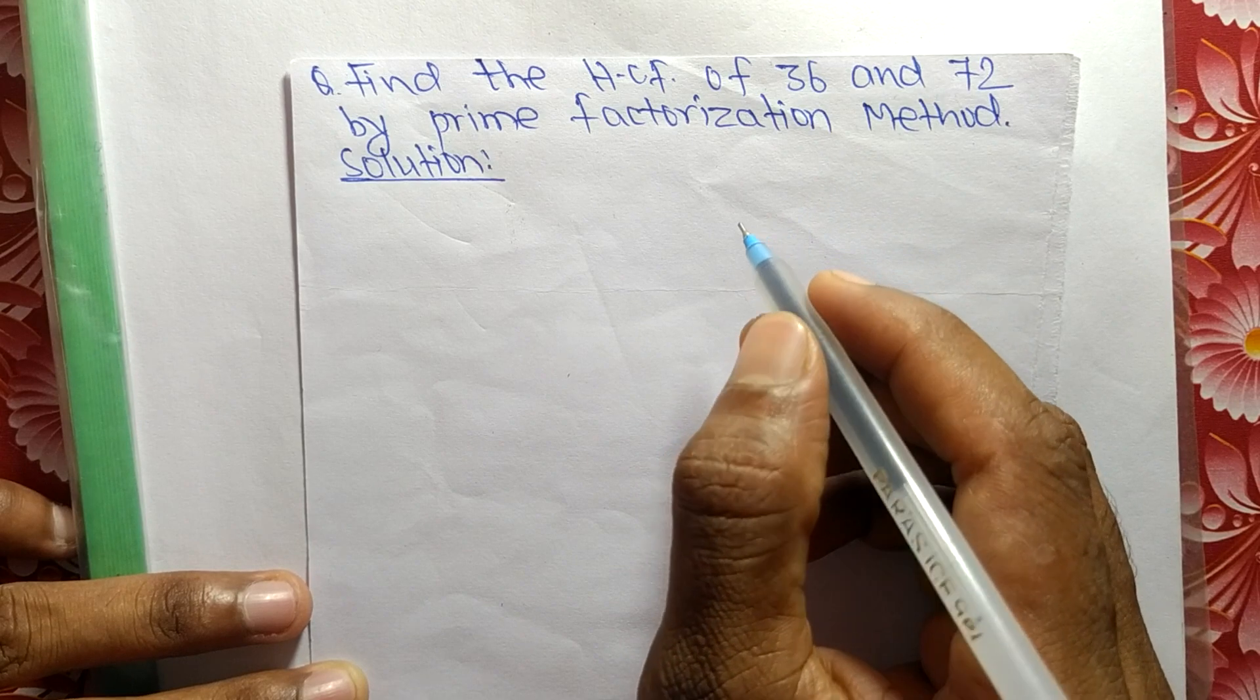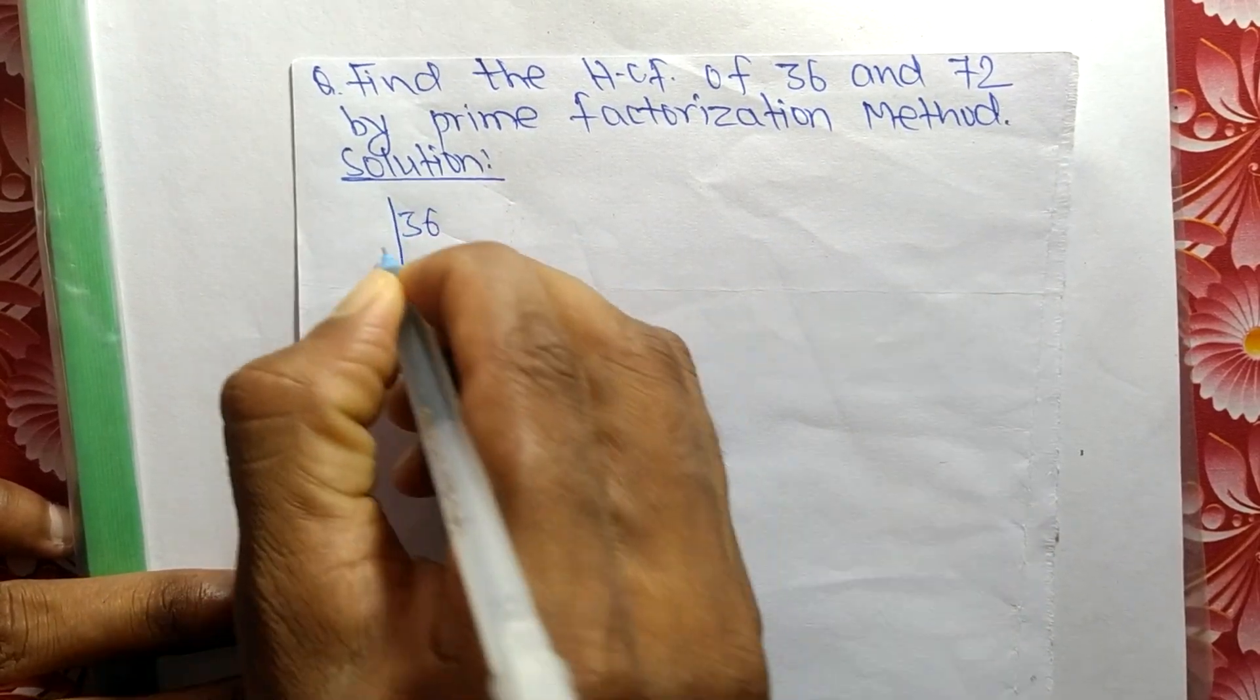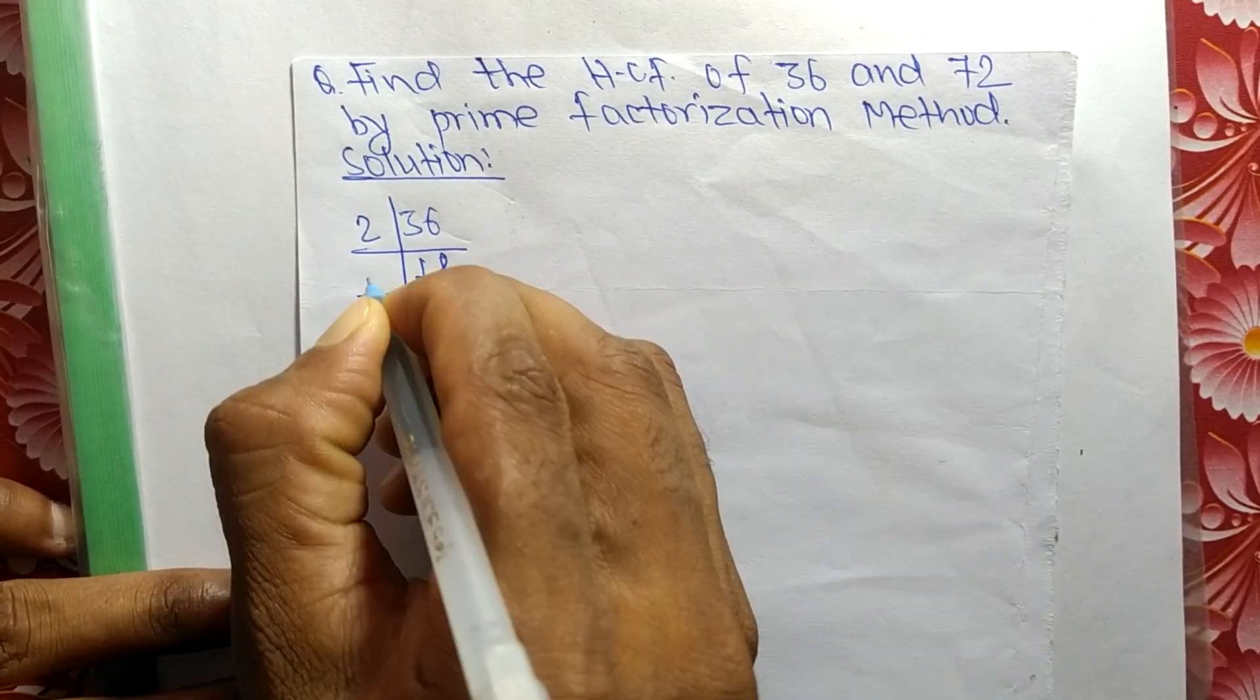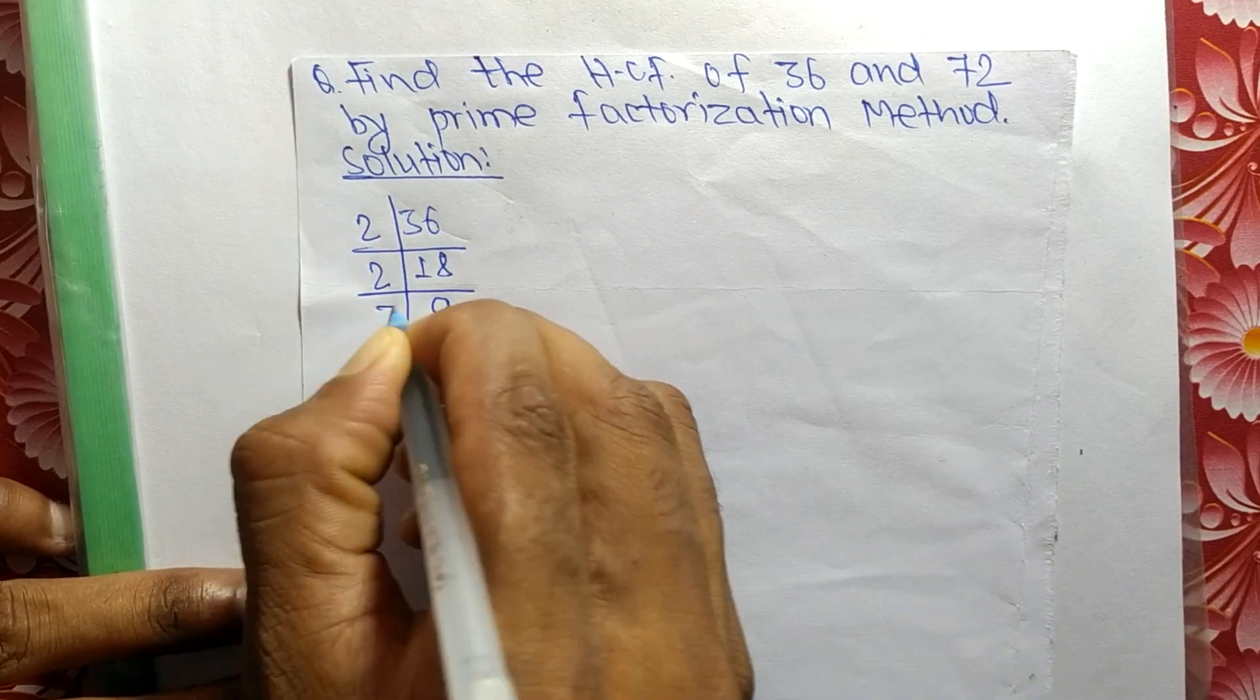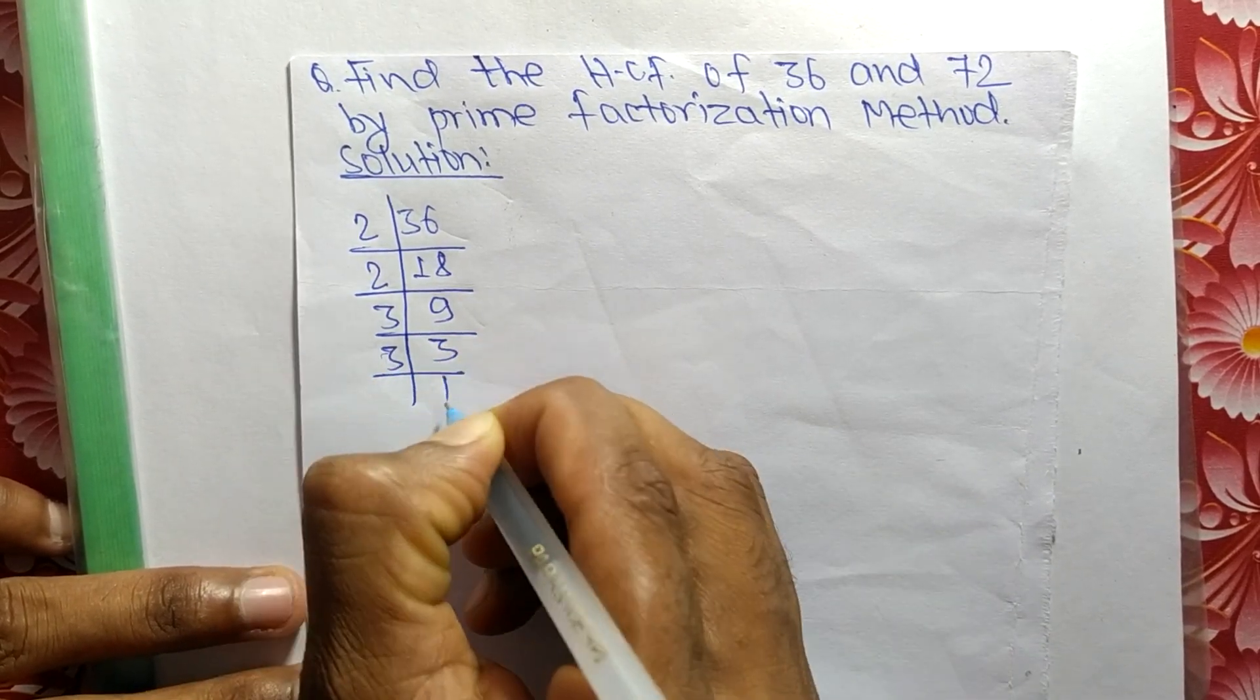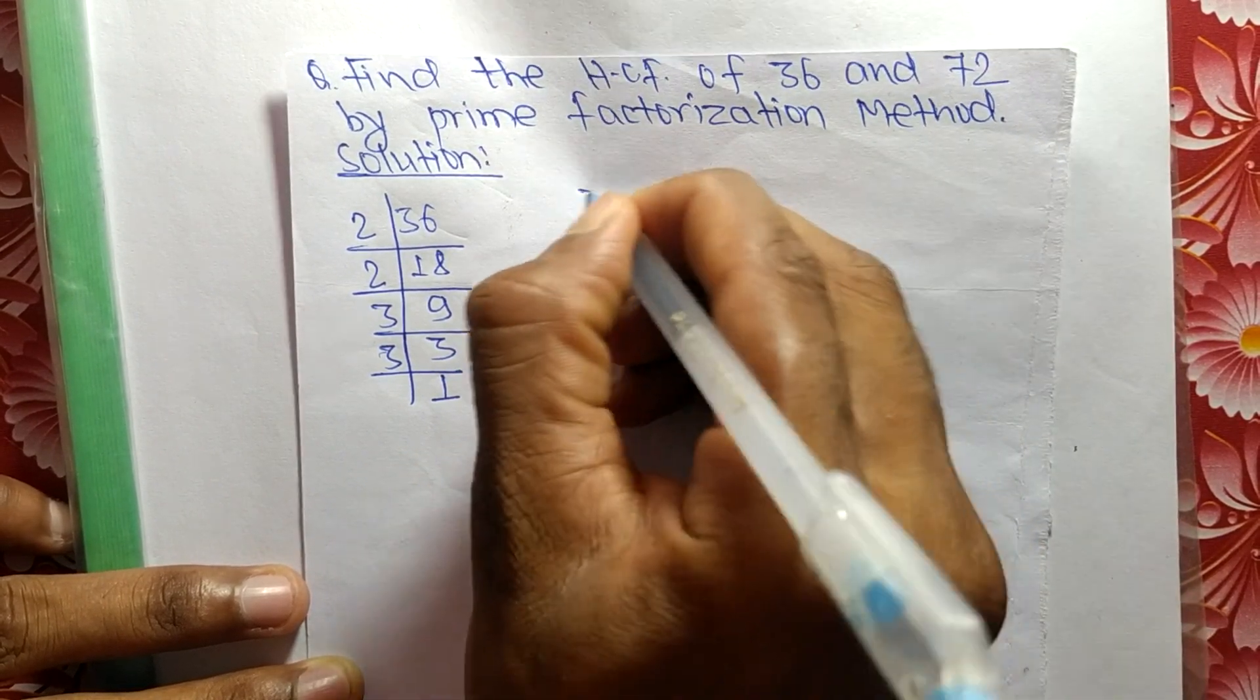First, we find the prime factors of 36. So it is 2 times 18 equals 36, 2 times 9 equals 18, 3 times 3 equals 9, and 3 times 1 equals 3. These are the prime factors.